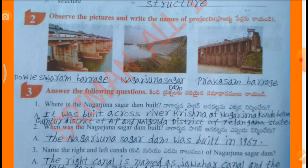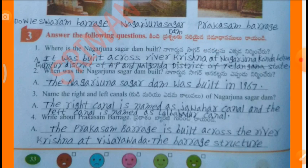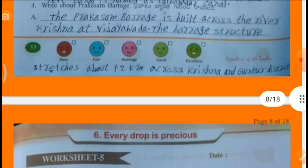Answer the following questions. Where is the Nagarjuna Sagar Dam built? It was built across river Krishna at Nagarjuna Konda, between Guntur district of Andhra Pradesh and Nalagonda district of Telangana. When was the Nagarjuna Sagar Dam built? The Nagarjuna Sagar Dam was built in 1967. Name the right and left canals: the right canal is named Jawahar Canal and the left canal is named Lal Bahadur Canal. Write about Prakasham Barrage: The Prakasham Barrage is built across the river Krishna at Vijayawada. The barrage structure stretches about 1.2 km across Krishna and Guntur districts.